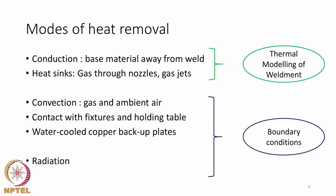What we will cover are the boundary conditions: the convection boundary condition when heat is removed by gas or ambient air flowing past the weldment; contact between the weldment and the table, which also contributes to heat removal; and sometimes a water-cooled copper backup plate to remove heat efficiently from the bottom. On the surface where temperatures are very high, heat is also lost through radiation, which also falls under boundary conditions.